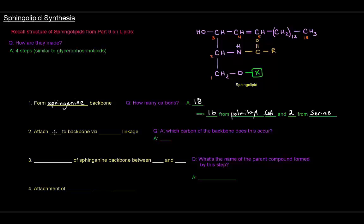The second thing that needs to happen is that we need to attach a fatty acyl-CoA as an acyl group to the backbone via an amide linkage. At which carbon of the backbone does this occur? We can see that occurs at carbon number two. I'll even put that in orange to indicate we're talking about that carbon numbered in orange.